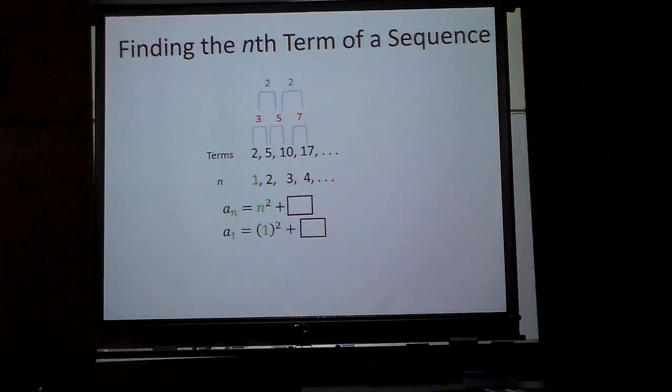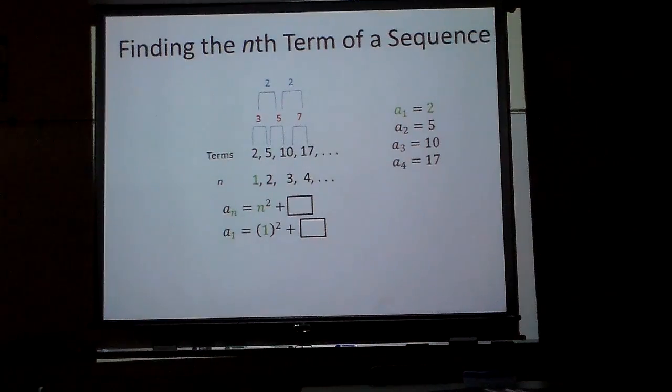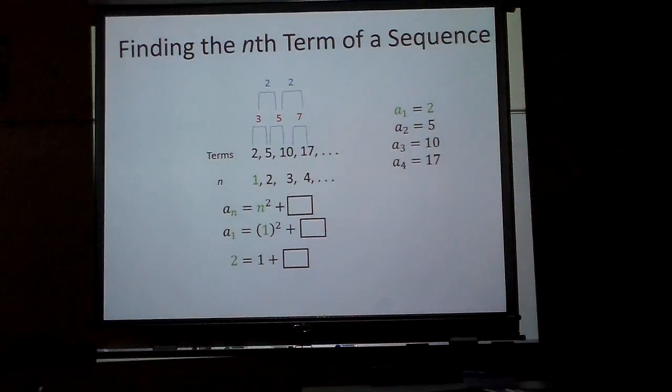So think about it. What's happening to all those numbers to make that happen? Well, think about it. a₁ is two. So, if I put two in there, and I take one times one, I get one. What would I have to add to one to get to two?